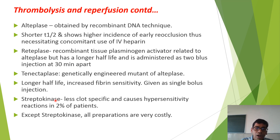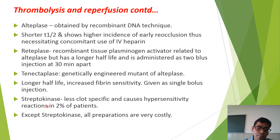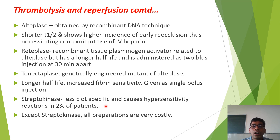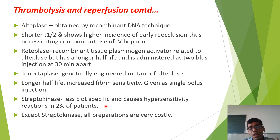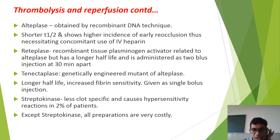Streptokinase, an earlier drug obtained from beta-hemolytic streptococci, is less fibrin-specific and carries a high risk of hypersensitivity reaction in at least two percent of patients. Another disadvantage is that a second dose is mostly ineffective because antibodies against streptokinase form after the first dose. Except for streptokinase, all preparations like alteplase, reteplase, and tenecteplase are very costly — roughly thirty thousand to forty thousand rupees per injection.